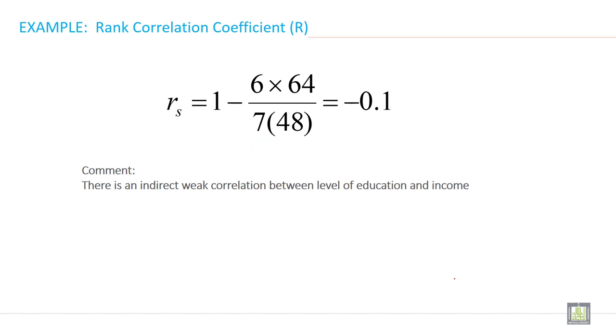Put all the values: one minus summation d square, so it is 64, divided by n, so n is 7, into n square minus 1. So n square is 49 minus 1, it is 48. If you solve this, you will get minus 0.1.